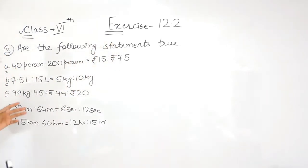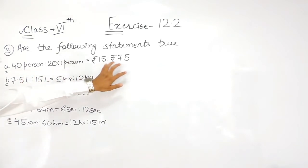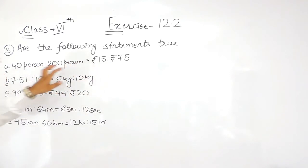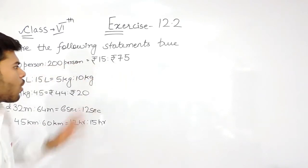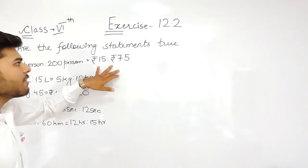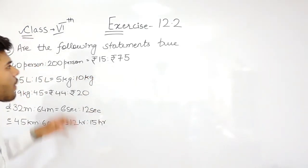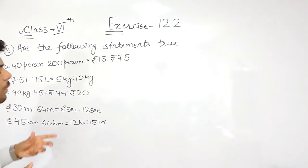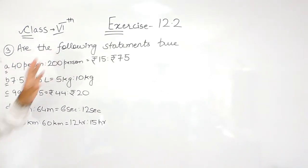Now you know that these statements say that the left hand side is in proportion with the right hand side. So what we will do is, we will find the ratio of this, we will find the ratio of this and we will check whether the ratio of left hand side is equal to the ratio of right hand side or not. Now, you may be wondering that here the unit is person on the left hand side and on the right hand side we are talking about rupees. So how can these statements be equivalent to each other? Now you know that the ratio has no unit. So that's why we can compare them.